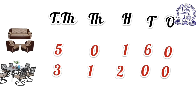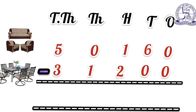Now subtract ones place: 0 minus 0 equals 0. Next, tens place: 6 minus 0 equals 6. When 0 is subtracted from a number, the difference is the number itself. Write 6 in the tens column.